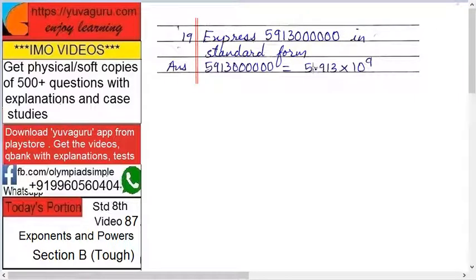Only one digit before the point means five point something. How can the number be expressed? How many places are there after the point? Three six three nine, so it is 5.913 × 10^9.